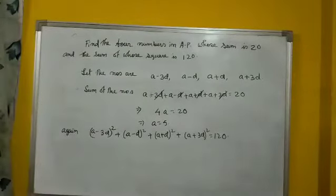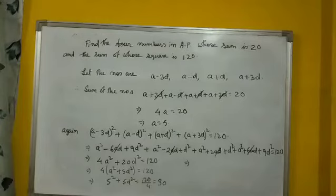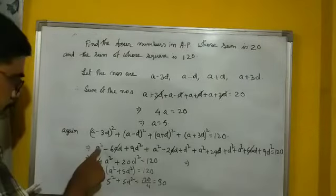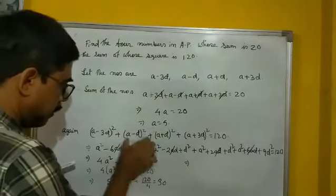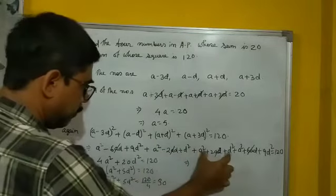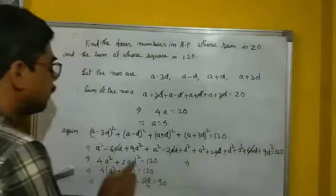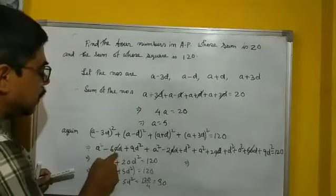And that calculation, after calculation we will get, using the A minus B whole square formula, and after that we will get that 6AD, and that 6AD cancel.